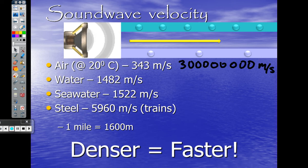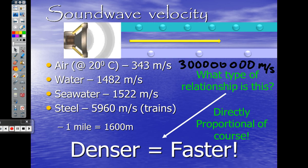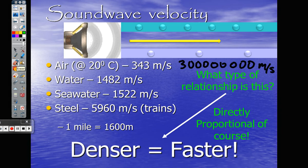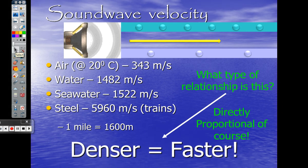Do not confuse speed with volume. How fast it travels is different than how loud something is. We're just talking about speed — velocity. One mile equals 1600 meters, we'll use that in some conversions. So what type of relationship is there between density and velocity? Directly proportional. If I was talking about two whales speaking to each other, the velocity in seawater would be 1522.